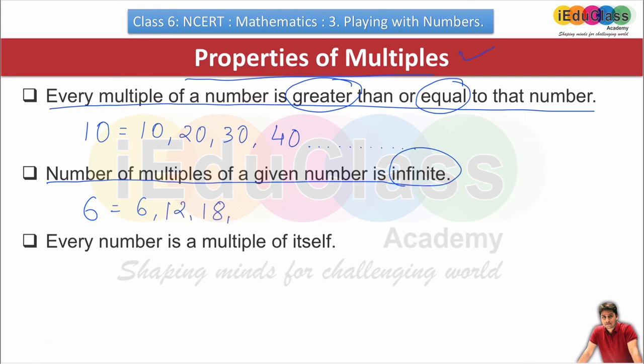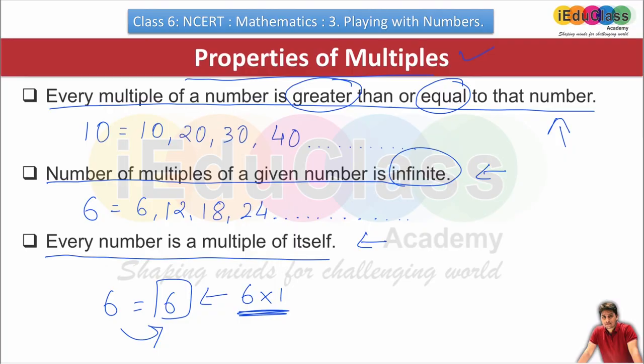Here we are told that whatever number it is, the first multiple is always itself, because it multiplies with 1, so the number itself comes. So remember these three properties about multiples. So we will move ahead to our next topic.